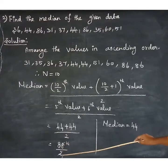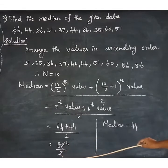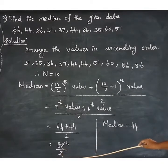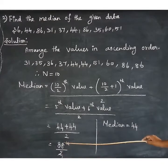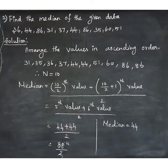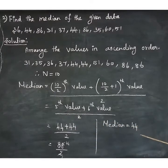So 88 divided by 2 equals 44. Therefore, the median value is 44.